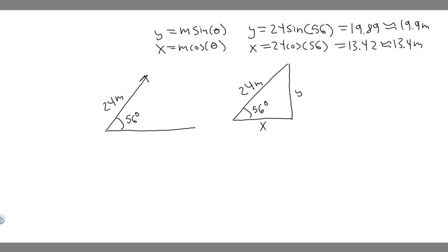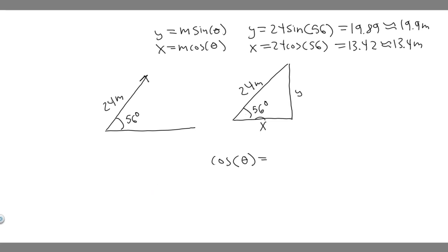Let me show you why it works. Think about trig — if we're taking the cosine of the angle, which in this case is 56 degrees, I'll just denote it as theta. What is cosine equal to? We know it's SOHCAHTOA — CAH — so it's the adjacent over the hypotenuse. The adjacent side of our angle is x, over the hypotenuse, which is 24, or m for magnitude. Multiply both sides by m and you get x equals m times the cosine of theta — exactly the formula we're using.